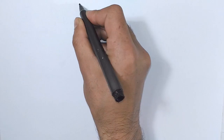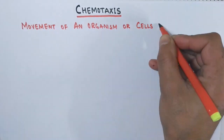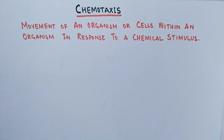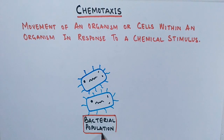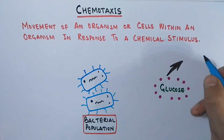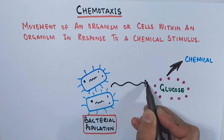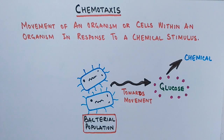Now let's see an overview of chemotaxis. Chemotaxis is the movement of an organism or cells within an organism in response to a chemical stimulus, and it is mostly seen in bacterial populations. Suppose we have a bacterial population and in its vicinity there are glucose molecules. As shown in this diagram, when the bacteria detect the presence of glucose — which acts as a nutrient — they move towards it because it is non-toxic and beneficial for them to obtain energy. That is positive chemotaxis by bacteria.